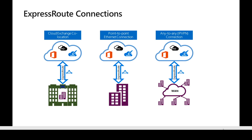The second option is a point-to-point Ethernet connection, which works well when the customer has a standalone data center and wants to connect to Azure — a point-to-point Ethernet connection is created from Azure to the on-premises data center. The third topology is any-to-any or IPVPN connection, also called ExpressRoute used in conjunction with MPLS. The customer may have multiple on-premises data centers connected through MPLS, and the ExpressRoute connection acts as one of the spokes of the MPLS connection to enable connectivity to Azure resources.